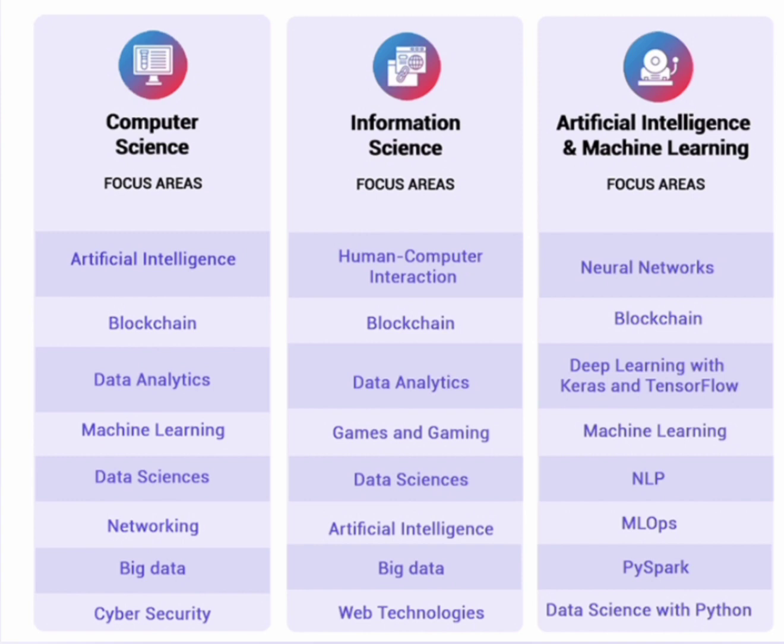When you take information science, you are focusing on the web development side. For AIML, most things are there but with a deeper focus on mathematical models. You will find NLP — natural language processing — which is about making devices smart, and also ML operations (MLOps), which is another differentiator from the other two branches.